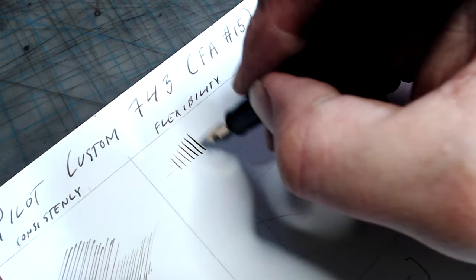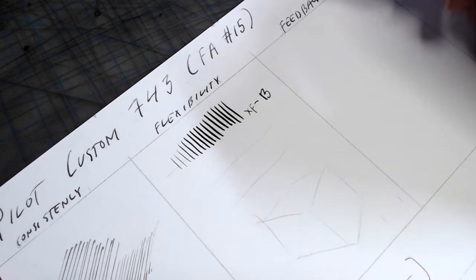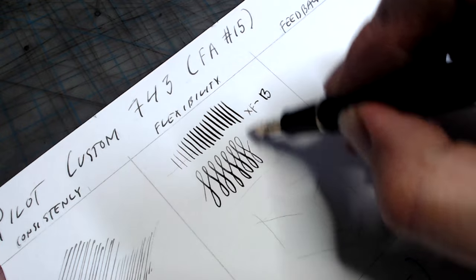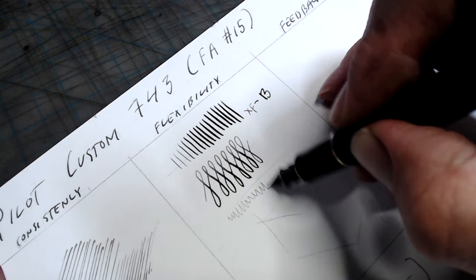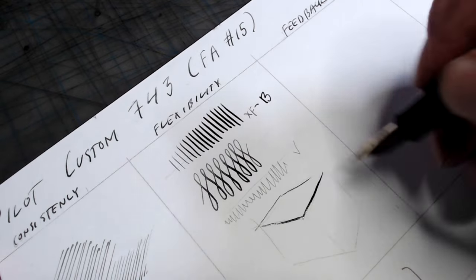In the flexibility test, the 743 puts down an unflexed line that is quite fine, though not quite as fine as the Custom 74, and then flexes to a broad. While not as flexible as the 912 FA, the line variation here is quite nice, better than either the Falcon or the Custom 74.